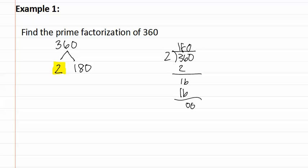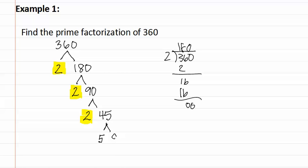We then circle or highlight the prime number and continue to factor the other number. We see it is also even, and two goes into 180 ninety times. We highlight the prime number and continue to factor the composite number. It is still even, so we know that two goes into it 45 times. We highlight the prime number and continue to factor the composite number.